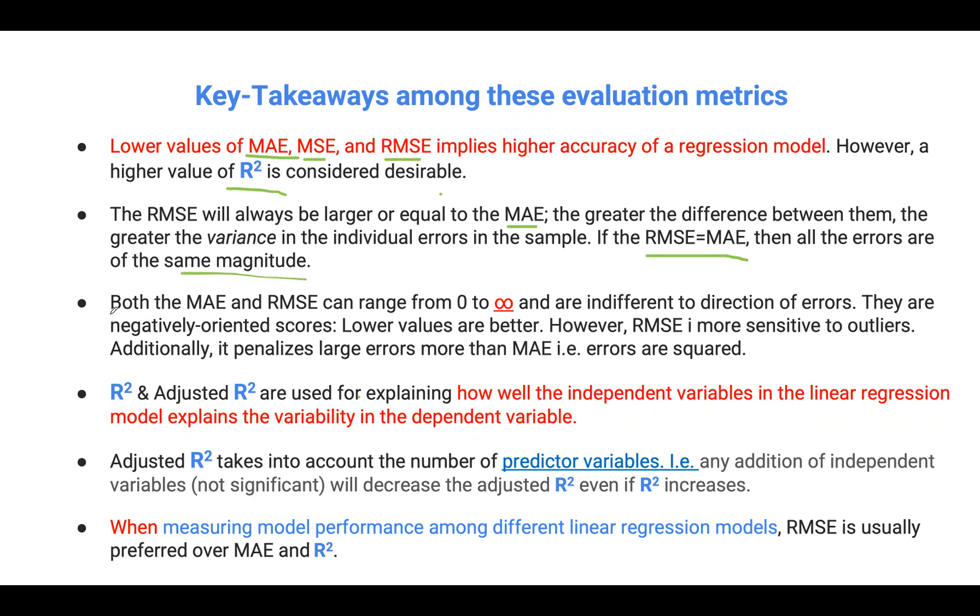Also, something to note is that both mean absolute error and RMSE, root mean squared error, can range from 0 to infinity and they're indifferent to the direction of errors. As a rule of thumb, the lower values, the better the models are, or rather, the higher the predictive power of our model.